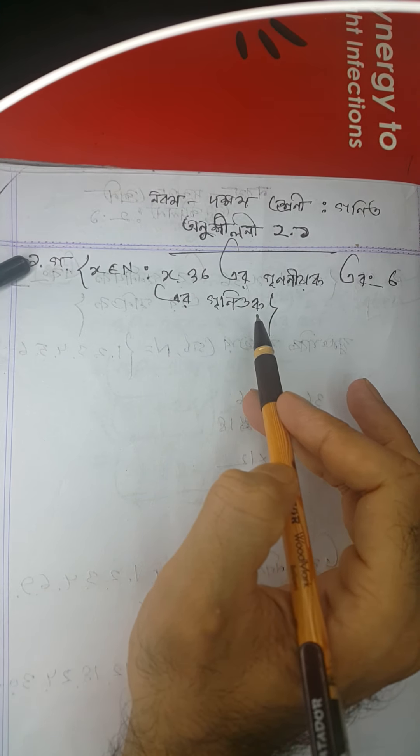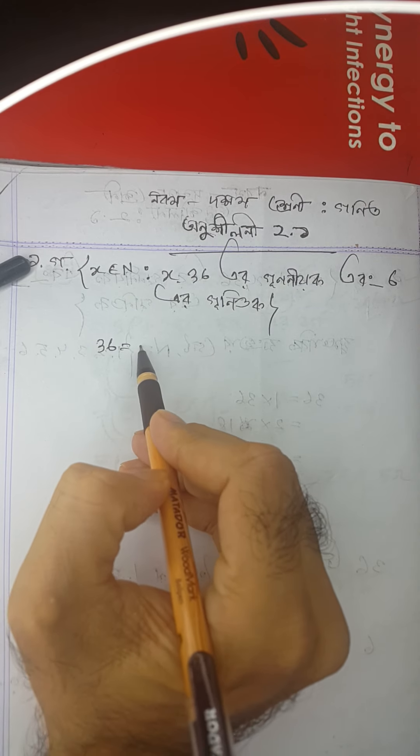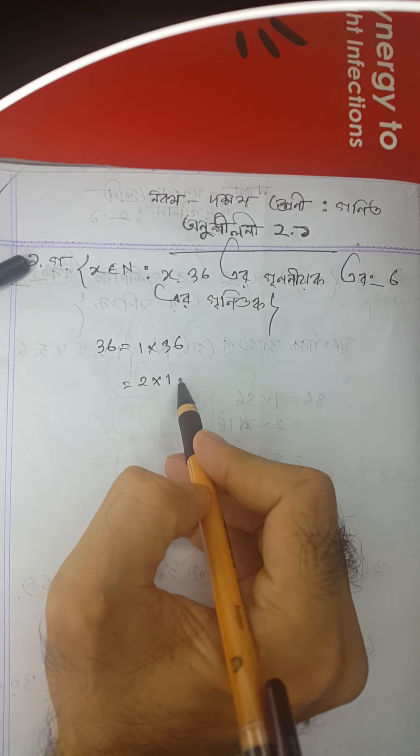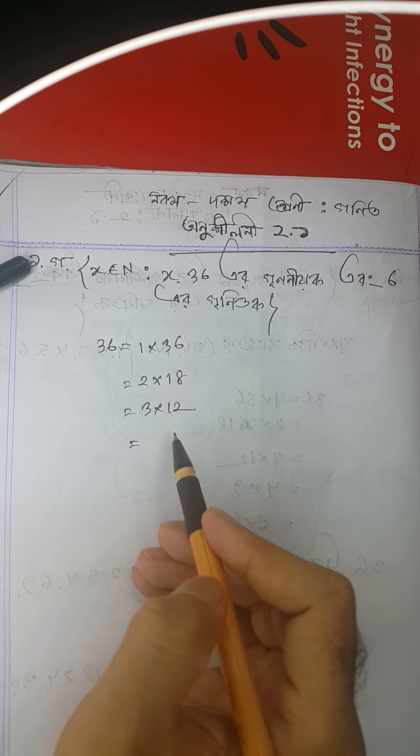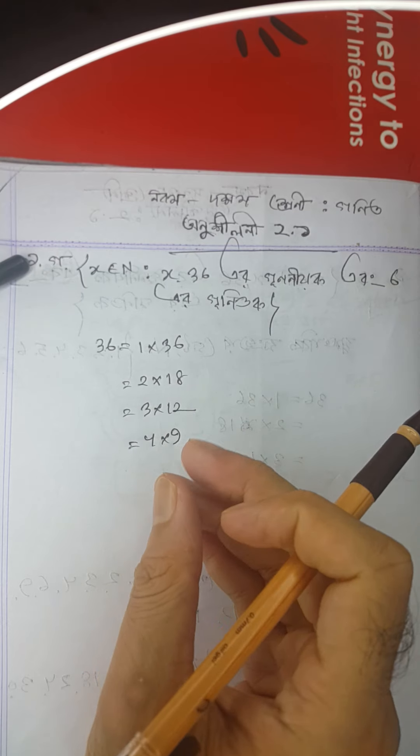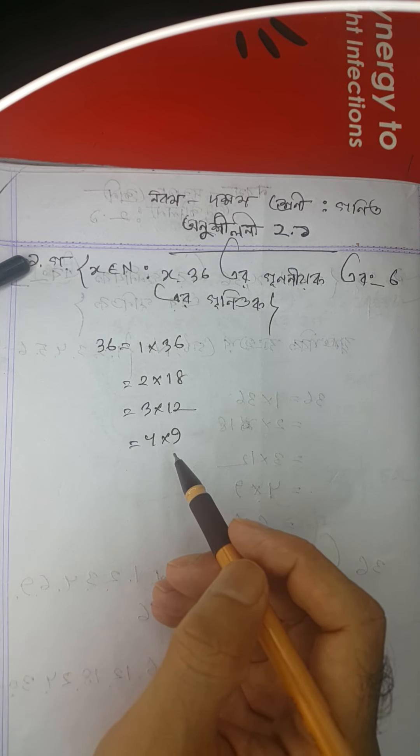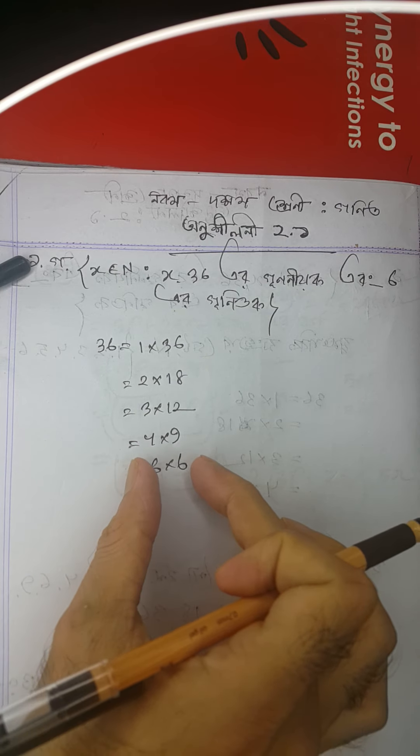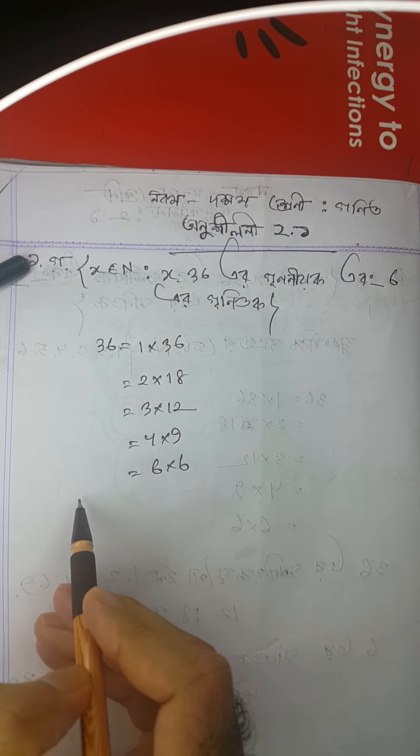To find the factors of 36, we'll start by finding all possible factor pairs. We need to find which numbers divide 36 evenly. Let's systematically find all factors of 36.